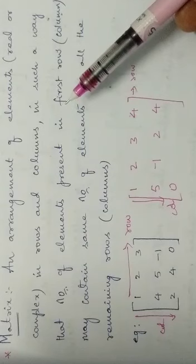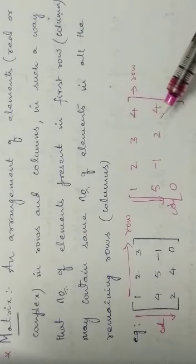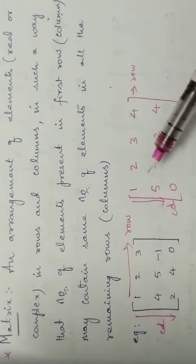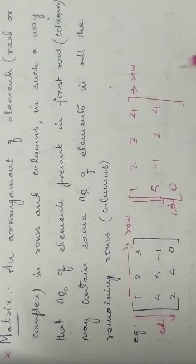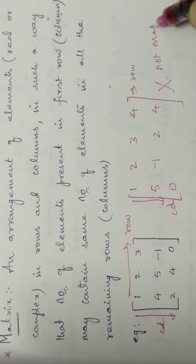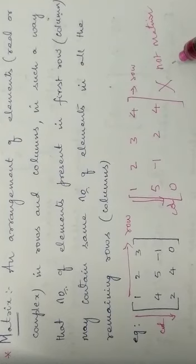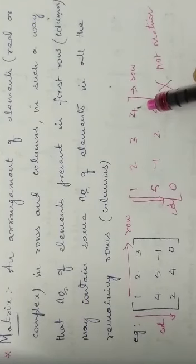The condition: if the first row has 4 elements, then the second row and all remaining rows must also have 4 elements. But here, one row doesn't have 4 elements — so the condition fails. This is not a matrix. Elements are arranged in rows and columns, but this arrangement is not a matrix since the number of elements in the first row does not match the remaining rows.